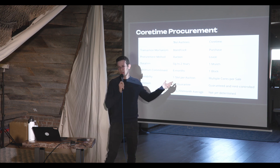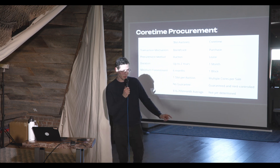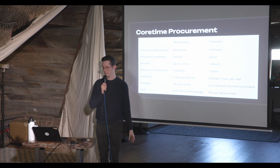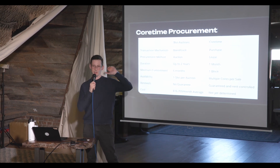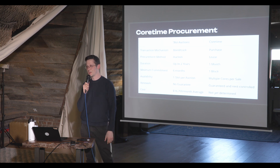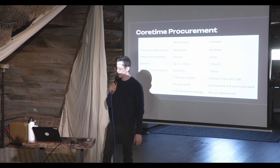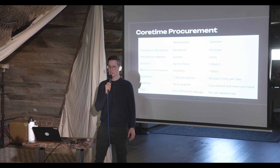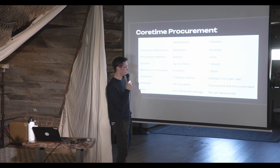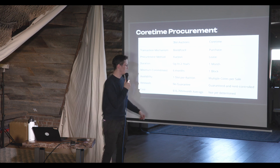There was one slot per auction — about two slots per month — but with core time there will be multiple cores per sale per month, definitely more than two. Thanks to recent advancements like asynchronous backing and larger validation functions, we can scale from the current ~60 cores to at least 200 cores, and hopefully more. We're not confident on the stress-testing data yet, but we're pretty confident we can get to 200 within the next year.